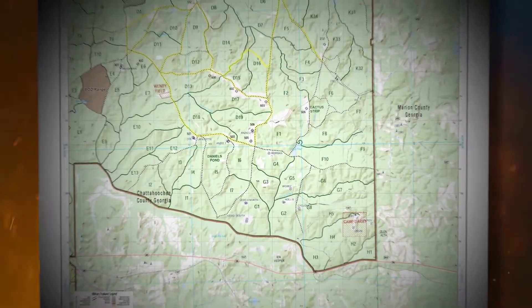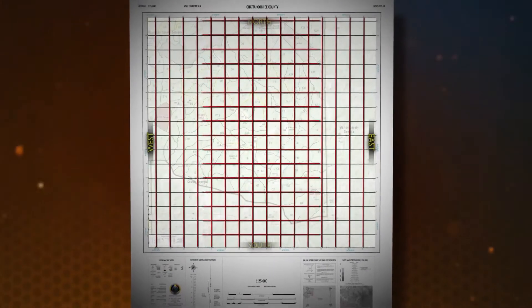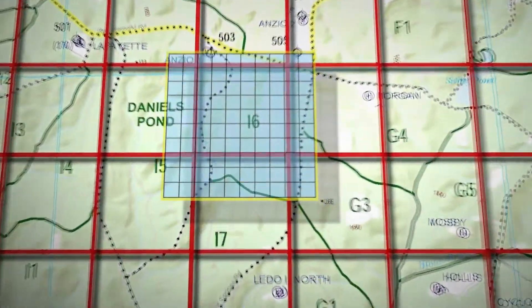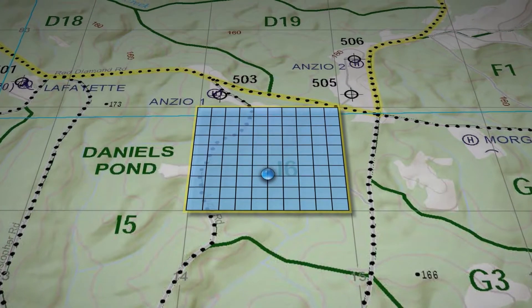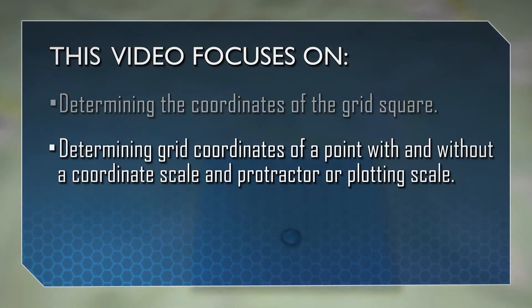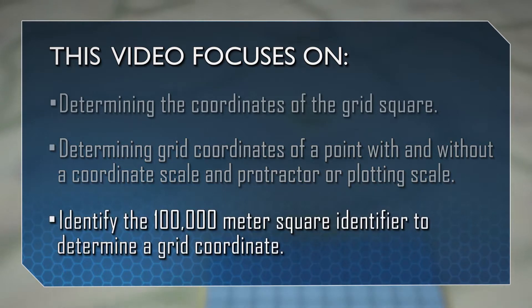The Military Grid System is a network of squares formed by the north-south and east-west gridlines printed on a map. The purpose of the grid system is to enable the soldier to quickly and accurately locate a point on a map. This video focuses on determining the coordinates of the grid square, determining grid coordinates of a point with and without a coordinate scale and protractor or plotting scale, and identifying the 100,000-meter square identifier to determine a grid coordinate.